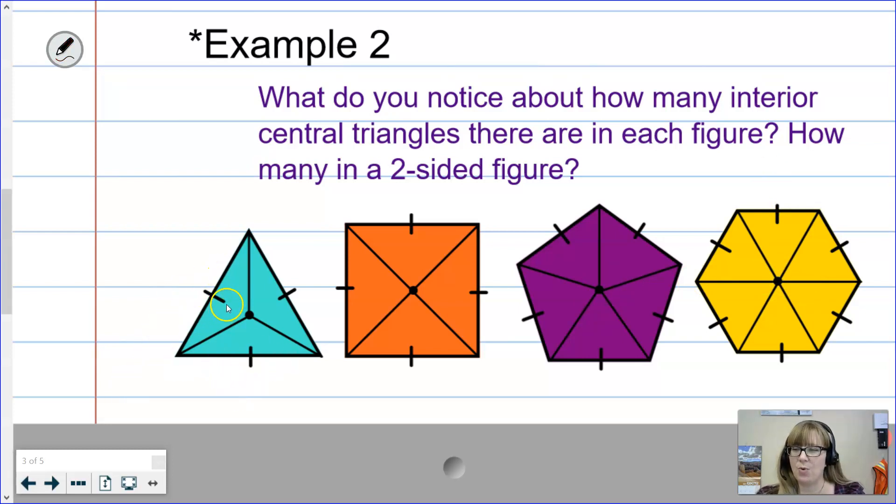This triangle has 1, 2, 3. So there are 3 interior central triangles. Here in this four-sided figure, a square, we have 1, 2, 3, 4. So 4. And I'm sure you're probably thinking at this point: do I need to include this in my notes? The answer is yes. Make sure you have this written down. In this five-sided figure, this pentagon, we can see 1, 2, 3, 4, 5 interior central triangles. And 1, 2, 3, 4, 5, 6 - in this six-sided hexagon there are six interior central triangles.